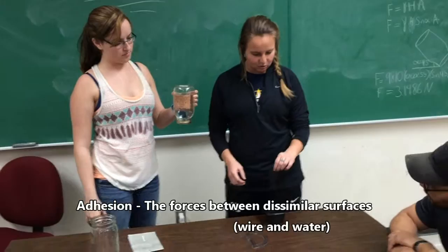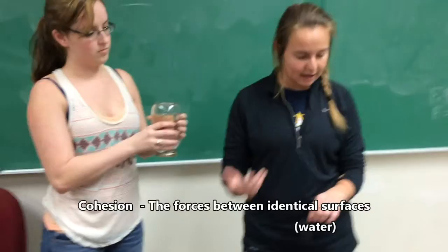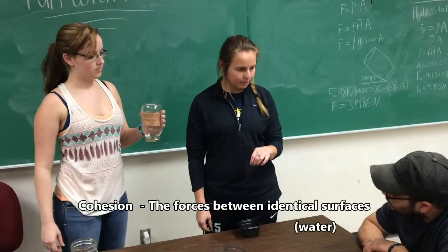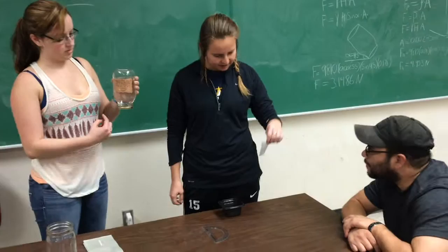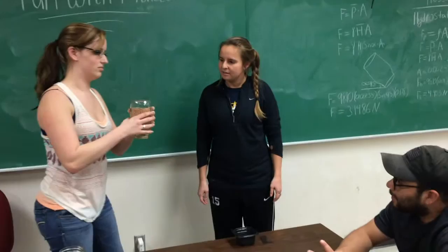Cohesion is the forces between the same type of material, so in this case the water sticks to itself, which creates the little bubbles you see in between each wire square. That's so neat — it creates a little membrane all around the bottom so the water doesn't leak out.